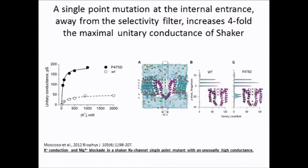In Shaker, a low-conductance potassium channel, mutations at proline 475, a residue located toward the cytoplasmic entry, increase single-channel conductance up to 6-fold with no detectable effect on selectivity.